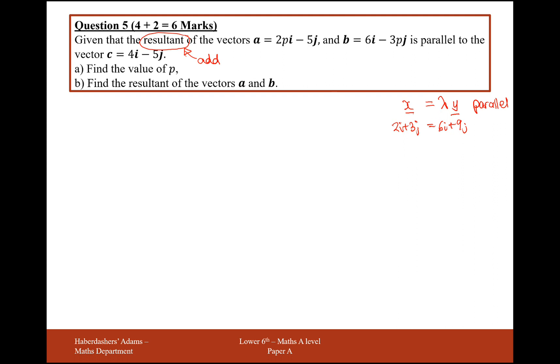So first of all, the resultant of the two vectors. So a plus b equals 2p, I'm just looking at the i's here first. So it's going to be 2p plus 6 on the i. And for the j, it's going to be minus 5 and minus 3p. So that's the resultant of the two vectors.